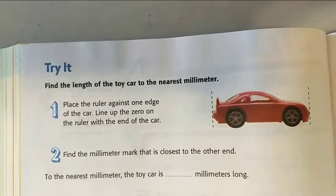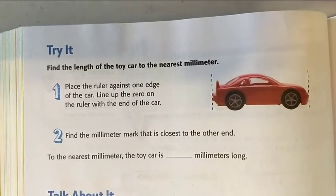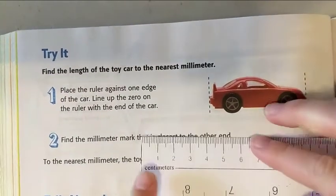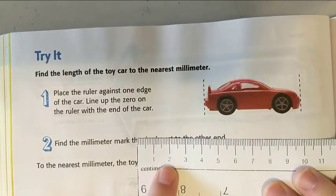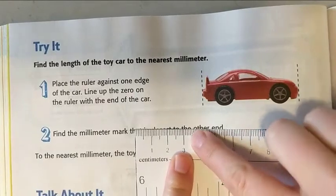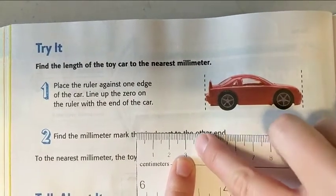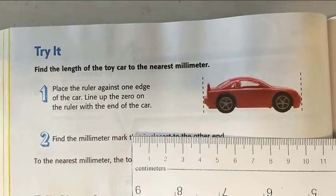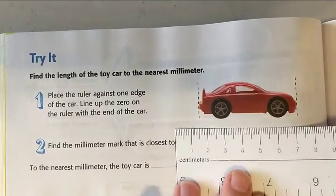Now they want us to do it on our own. Find the length of the toy car to the nearest millimeter. Instead of counting these as one, two, three, four, it's 10, 20, 30, 40, and the little lines in between each count as one, with the longer one being five. In millimeters, I'm still using my centimeter side, but each tiny mark counts as one.